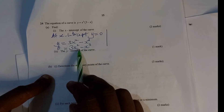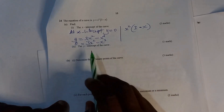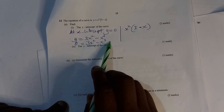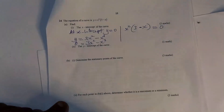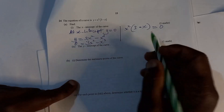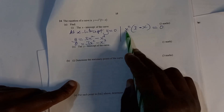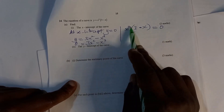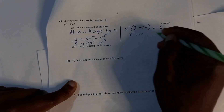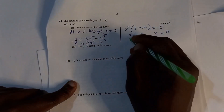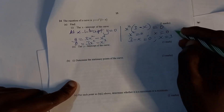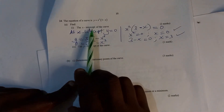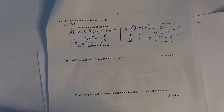Factorize 3x squared minus x cubed — x squared is common, giving x squared times (3 minus x) equals 0. From here, x squared equals 0, so x equals 0, or 3 minus x equals 0, so x equals 3. Therefore the x-intercepts are at x equals 0 and x equals 3.